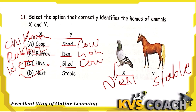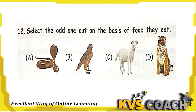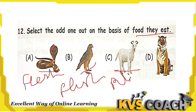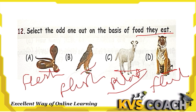Question 11: Select the odd one out on the basis of food. Snake is a flesh eater, eagle is a flesh eater, tiger is a flesh eater, but goat is a plant eater. So the odd one out is goat.